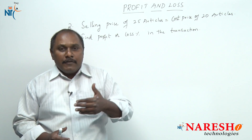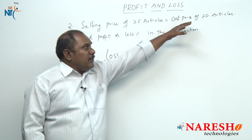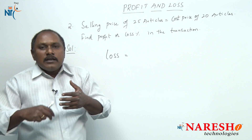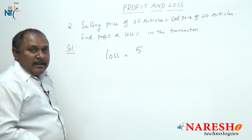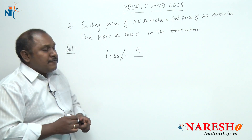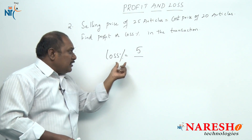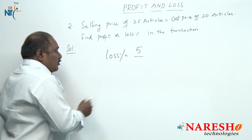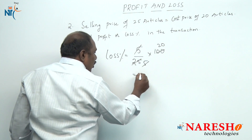So is there a profit or loss here? You can clearly see there is a loss. You give some money to purchase 20 articles, but to get back the same money you must sell 25 articles — so you are losing 5 articles. Loss percentage with respect to quantity is calculated on quantity sold: loss = 5 articles, quantity sold = 25. So 5 / 25 × 100 = 20. There is a loss of 20 percent.